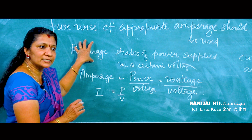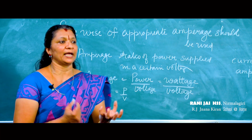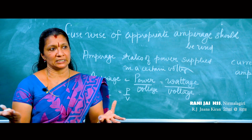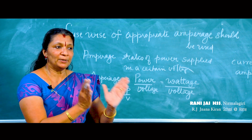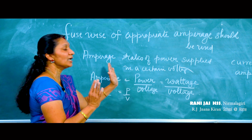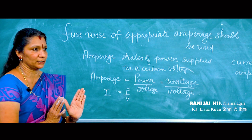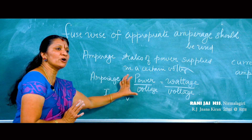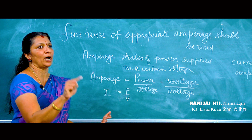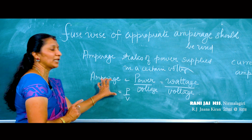So why is this taught? For a fuse wire, you consider how many appliances are working at home. For each room, suppose you have more than one appliance — you calculate how much power each appliance needs at a certain voltage, and based on that, the current allowed to pass through the fuse is calculated.